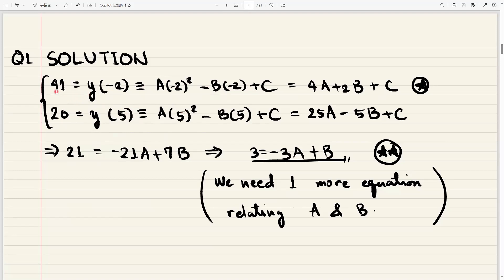What we have here are the following. We use this given, 41 equals y of minus 2. Now, we replace all x's with minus 2. This is what we get. We do the same thing for this given, 20 equals y of 5. We replace the x's with 5, and this is what we get. But notice that we have a, b, and c, and we only have two equations, but three unknowns. So we need one more equation that relates a and b.